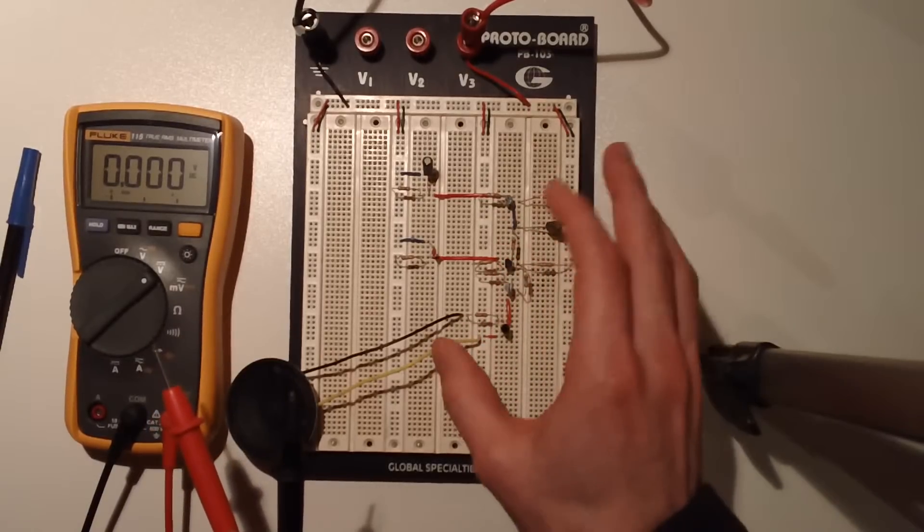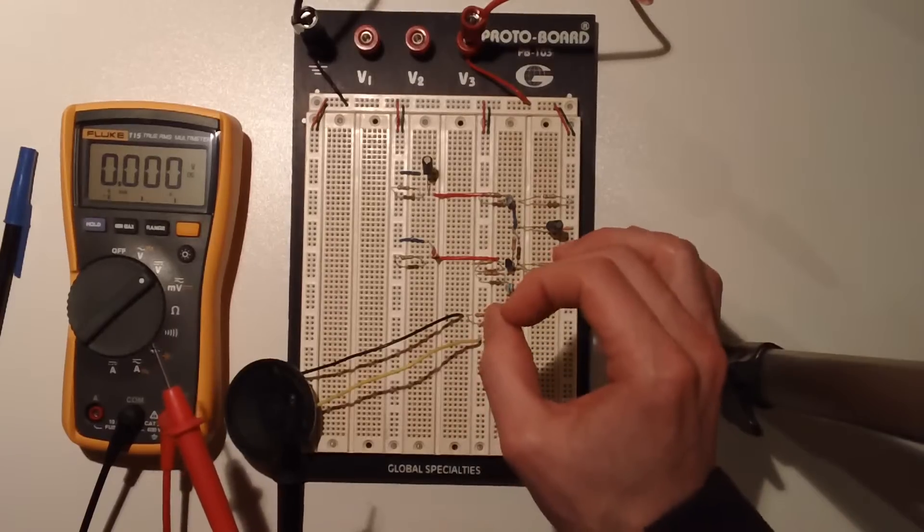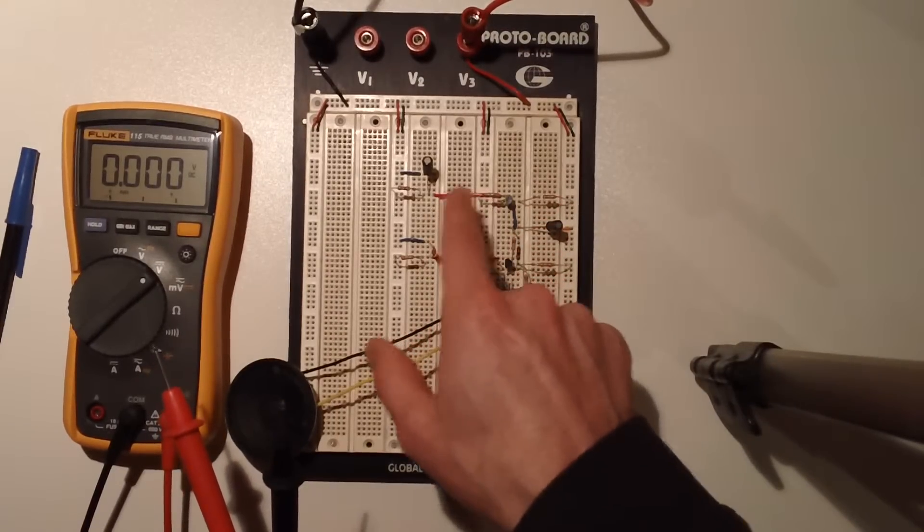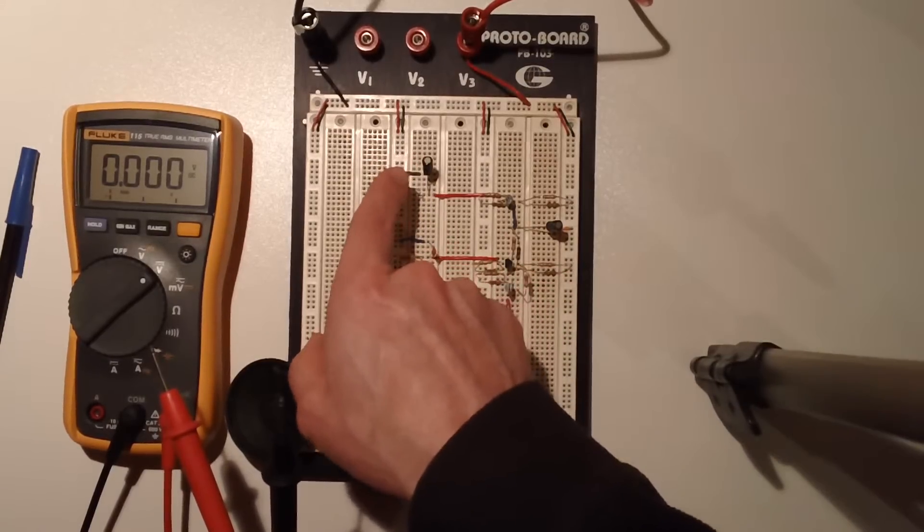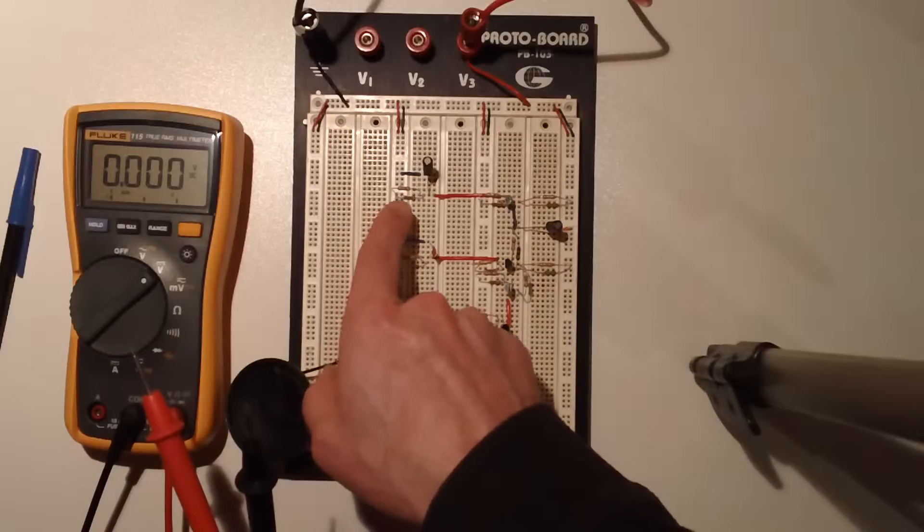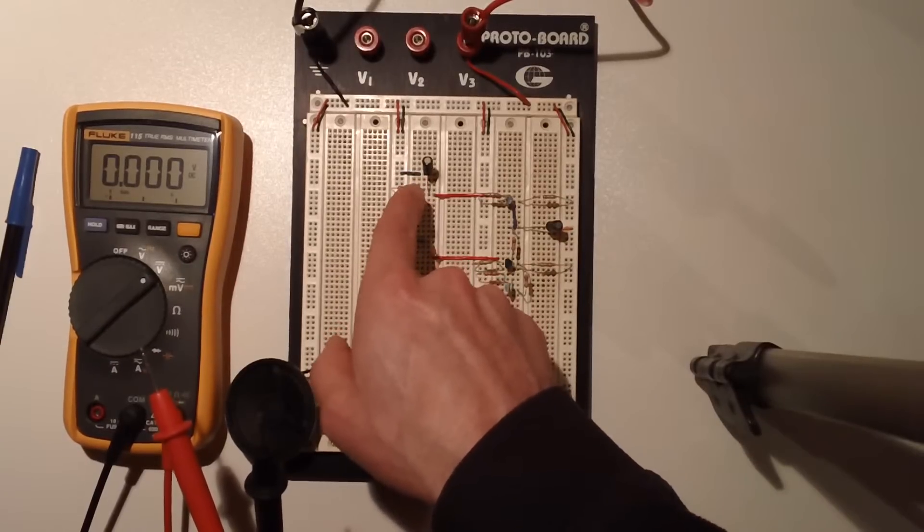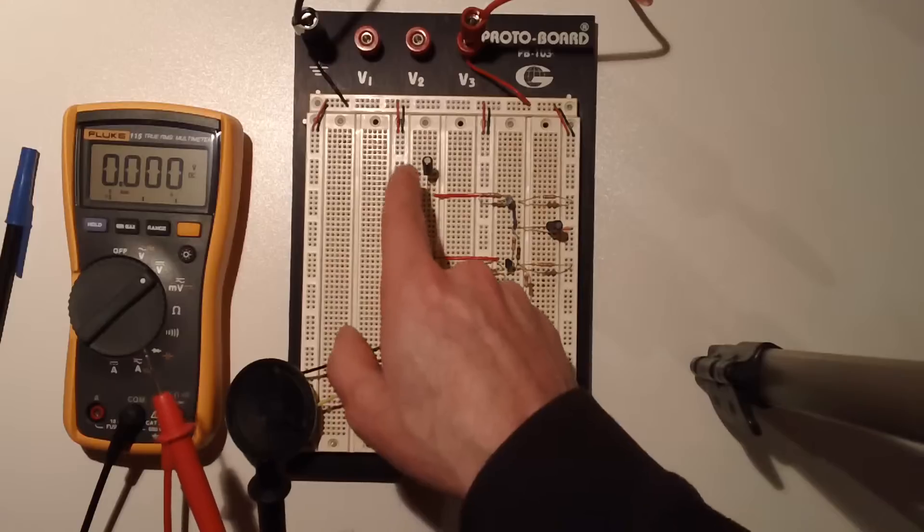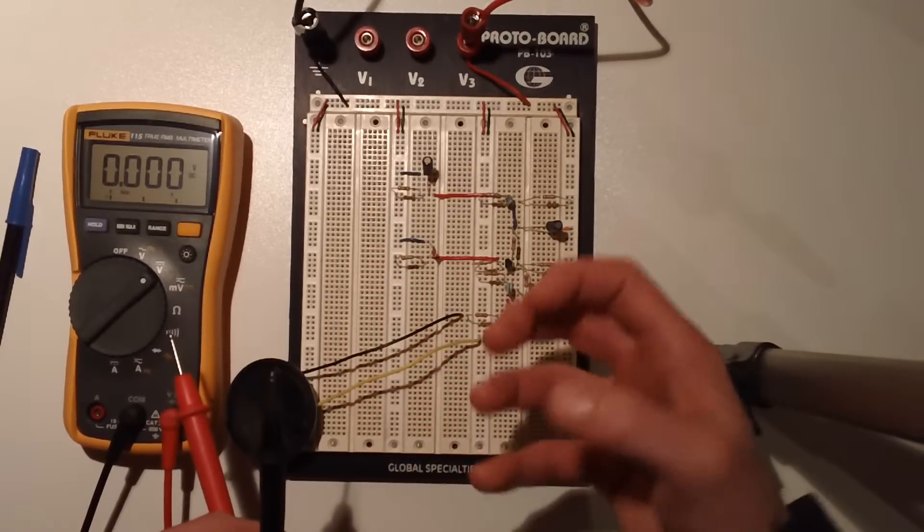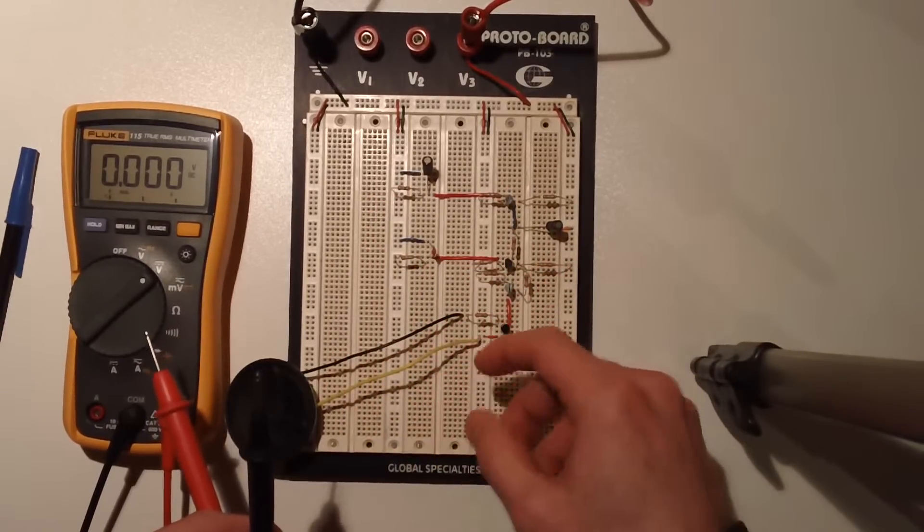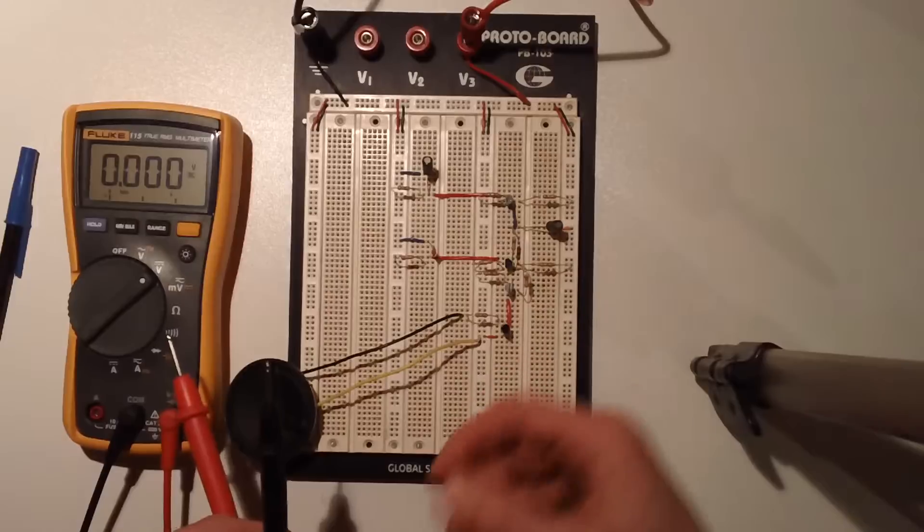Then that means we would have to wait a longer duration for this capacitor to actually reach that 4 volt threshold, like through charging. So all this stuff is connected. You can play with things by changing resistor values or capacitor values or all sorts of things.